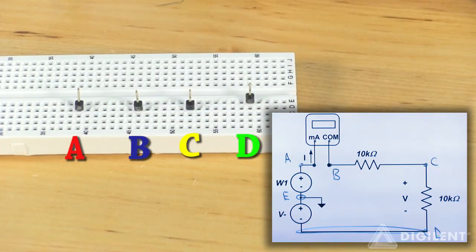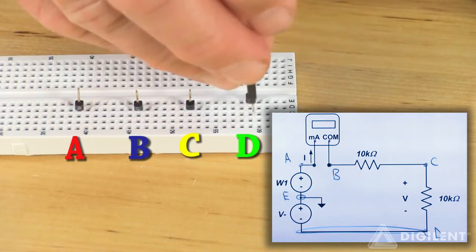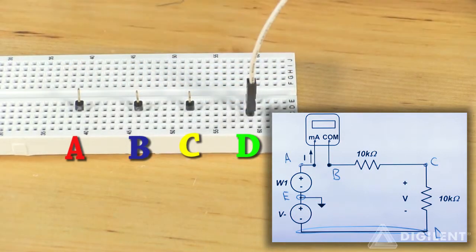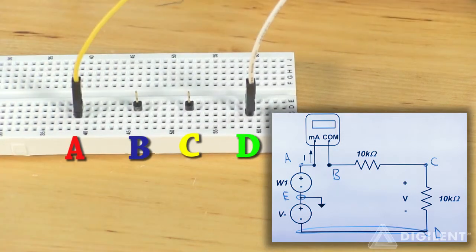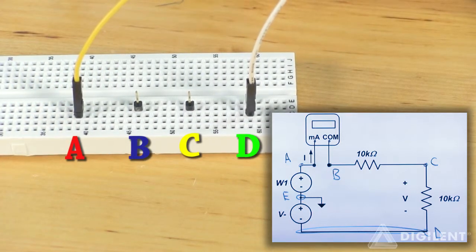Now I'll connect my power supplies. V minus, the white wire, goes in a hole that's in the node D row. Channel 1 of the AWG, the yellow wire, connects to node A, and ground doesn't get connected anywhere.